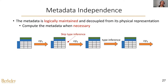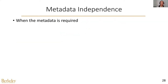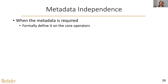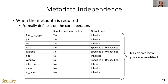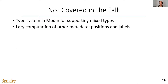For example, we can skip the type inference after operator 1 because operator 2 does not need this type information. The next question is how do we know when metadata is required? We formally define it on the core operators. This table summarizes when type information is required for each core operator and how it is modified across the core operators. In the paper, we include a type system in Modem and also the lazy computation for other metadata. Please find the details in the paper.